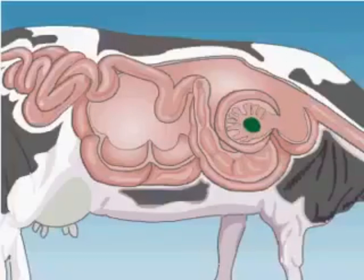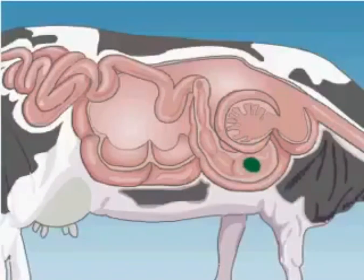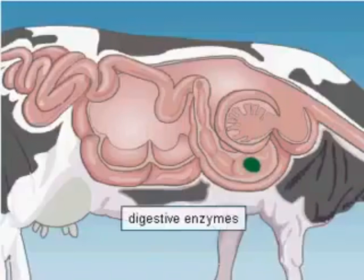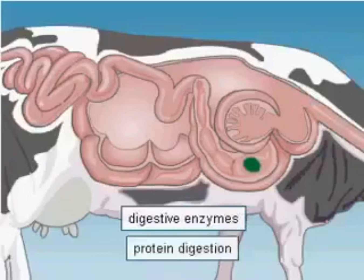From the omasum, the condensed digesta passes to the abomasum, the final chamber of the stomach. The abomasum, which is the proper stomach, secretes enzymes to initiate the digestion of proteins released from blood cells and also proteins of bacteria and ciliates found in the rumen.